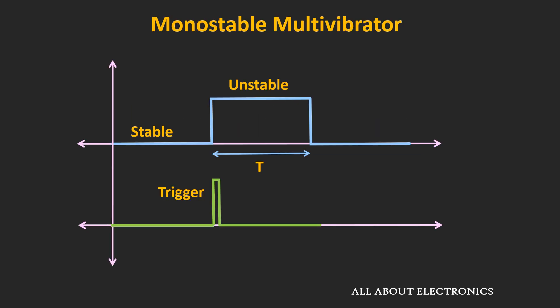The monostable multivibrator is a circuit where the output remains in the stable state, but whenever an external trigger signal is applied, momentarily the output goes into the unstable state, and then comes back into the stable state. The duration for which it remains in the unstable state depends on the values of the resistor as well as the capacitor.